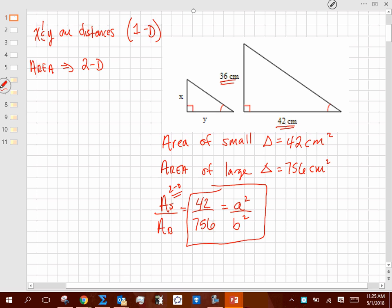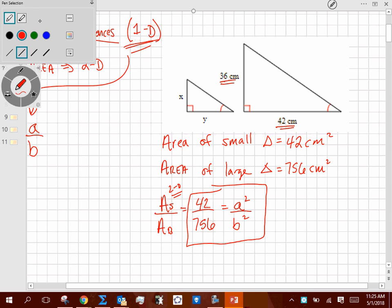That is a squared over b squared. If I want to find x and y, linear distances, one-dimensional distances, the ratio that I need to do that is a over b. Does that make sense? Well, if I'm trying to find a over b, and I have a squared over b squared, shouldn't I just be able to take square root of that thing?